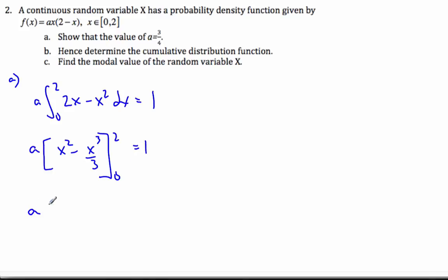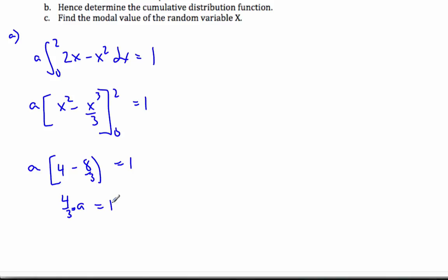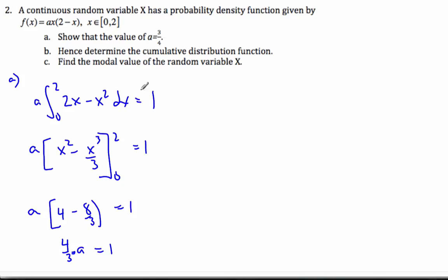Plugging in my values, I know that I get 4 minus 8 thirds minus 0, equal to 1. Doing some math on here, I know that if this is 12 thirds, so I get 4 thirds times A. If you're not sure the 4 thirds, you can do the math yourself, is equal to 1. And so happily so, A is equal to 3 quarters, which is what I wanted to show in the first place.